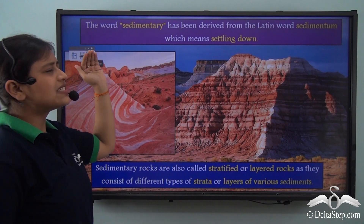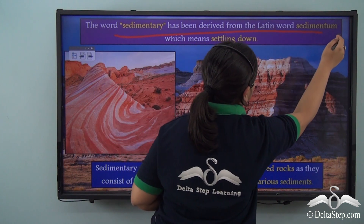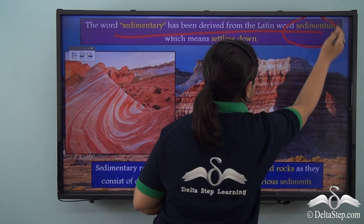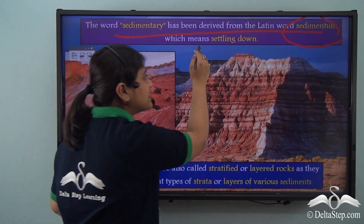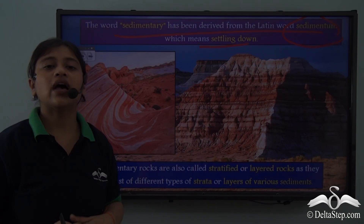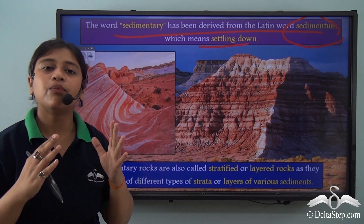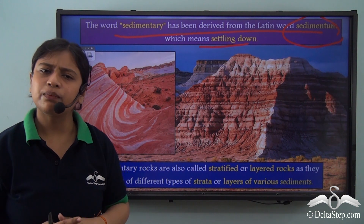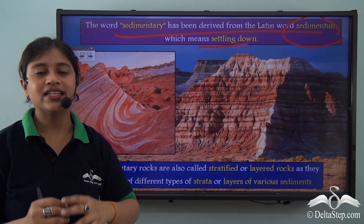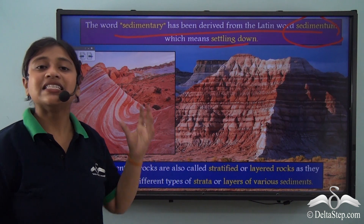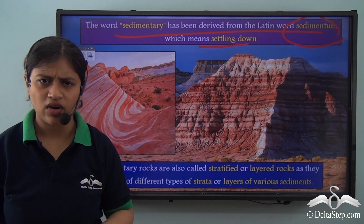The word sedimentary is derived from the Latin word 'sedimentum'. Sedimentum means settling down. As we witnessed in the video, the deposition of sediments took place in layers — they were settling down in layers — and therefore the term sedimentary has been given to these types of rocks.